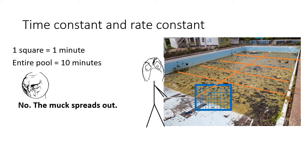In this case, the rate constant is 0.1, meaning that the proportion of the pool that I can clean per unit time if I were to continue at the initial rate is 10%.